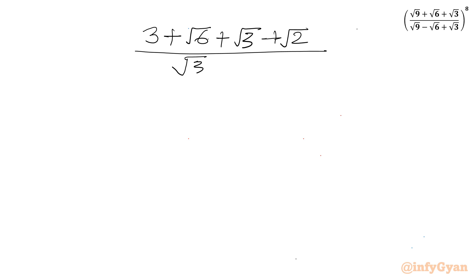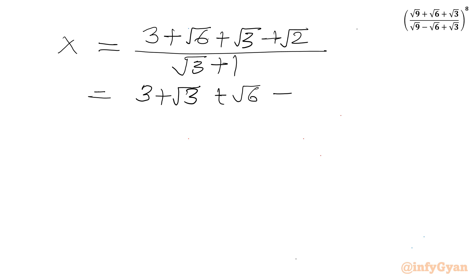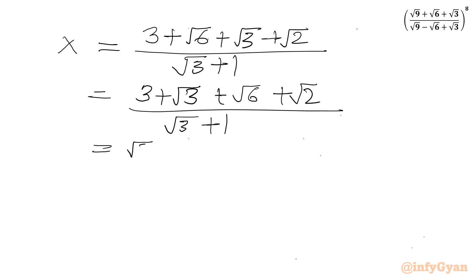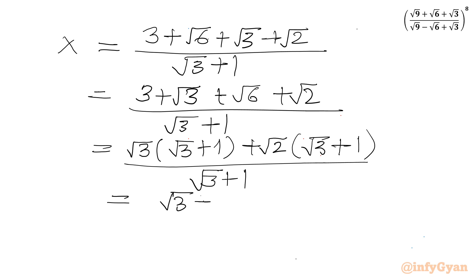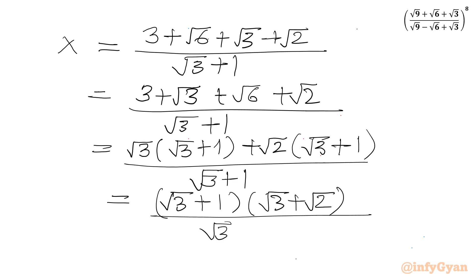The denominator is (√3 + 1). Now from the numerator, I'll club 3 and √3 together, and √6 and √2 together. From the first two terms I take √3 common, giving √3(√3 + 1), and from √6 and √2 I take √2 common, giving √2(√3 + 1). So (√3 + 1) is overall common in the numerator, and after cancelling with the denominator we get x = √3 + √2.